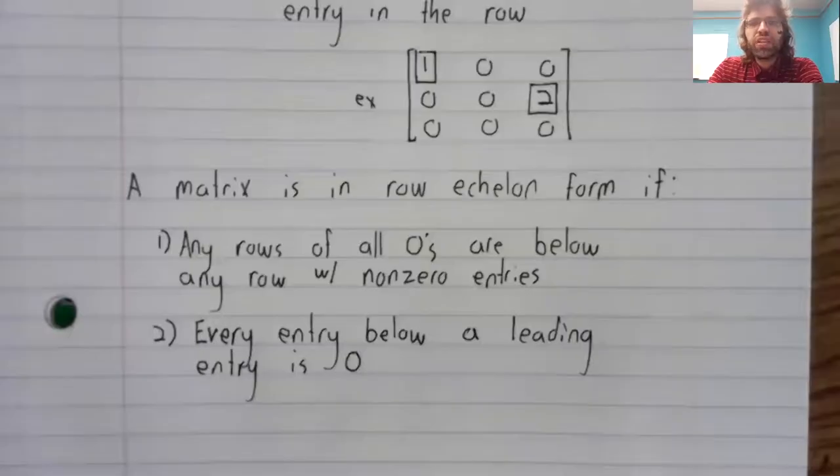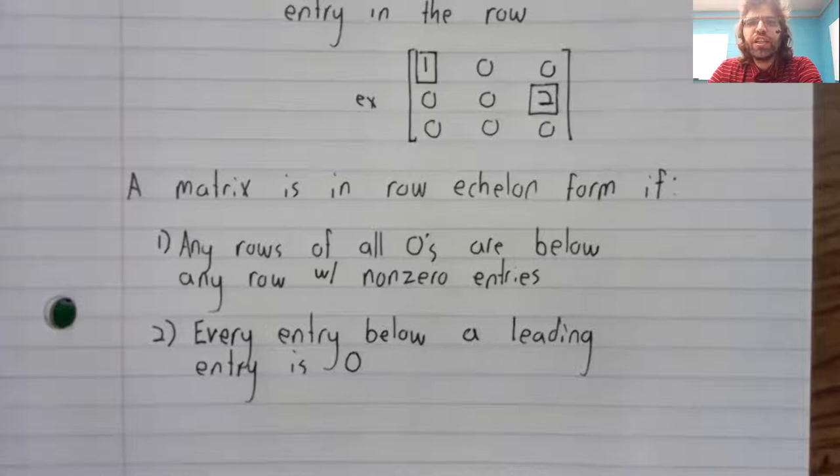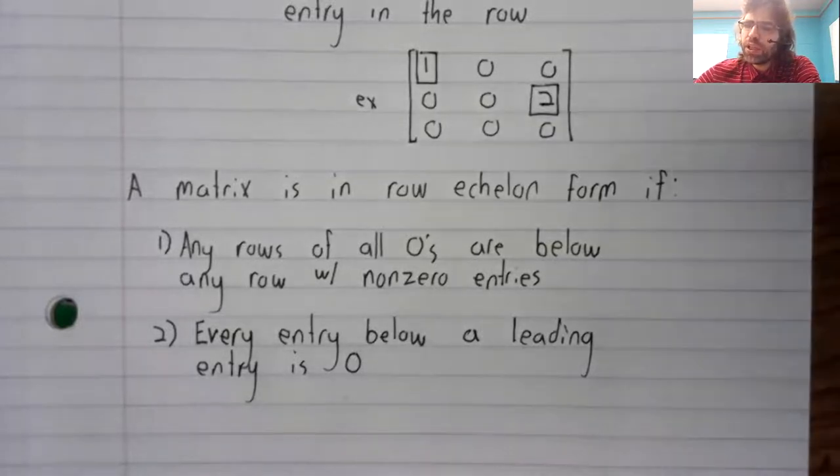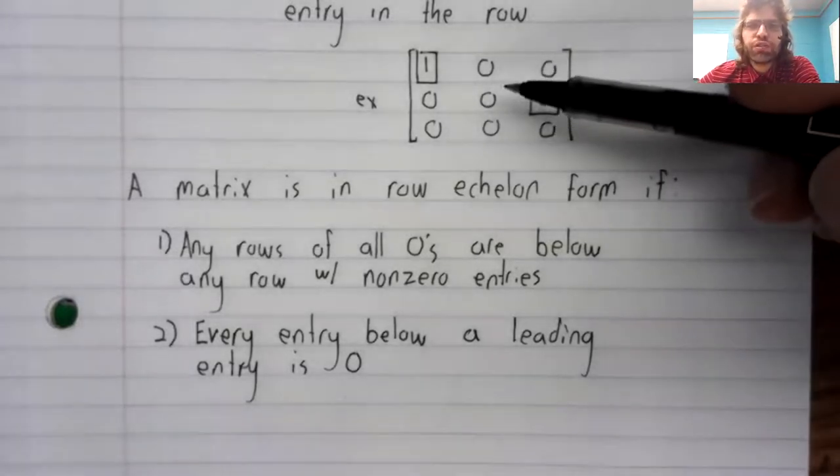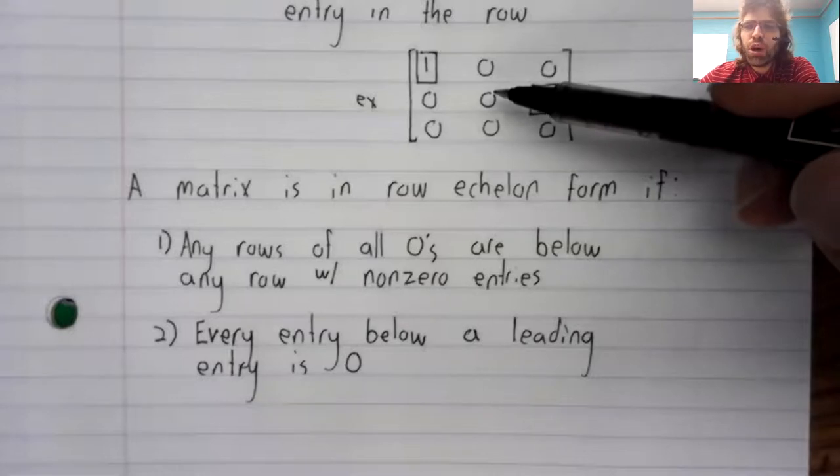The second condition: every entry below a leading entry is zero. And once again, this matrix satisfies that property.